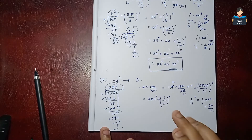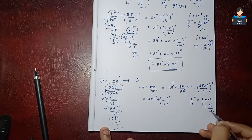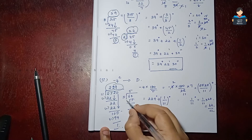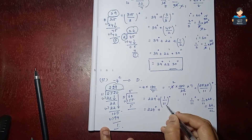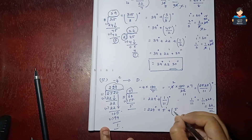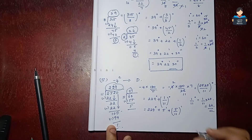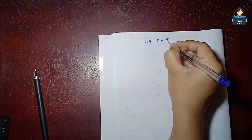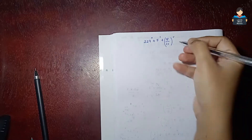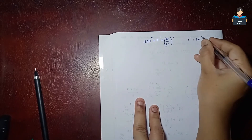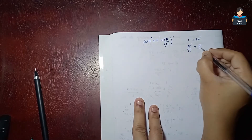Converting 1 by 11 degree to minutes: 1 by 11 into 60 gives 60 by 11. Dividing 60 by 11: 11 fives are 55, remainder 5. So we have 5 minutes plus 5 by 11 minutes remaining. Converting 5 by 11 minutes to seconds: 5 by 11 into 60 equals 300 by 11.